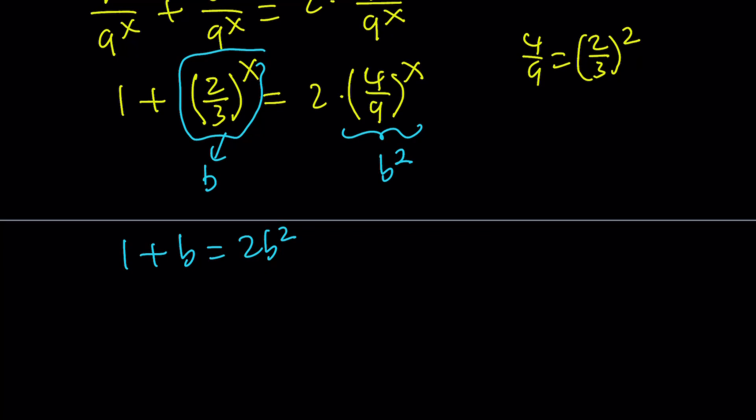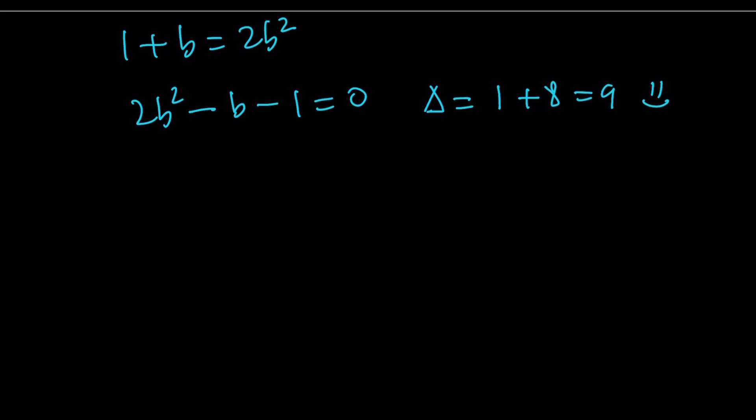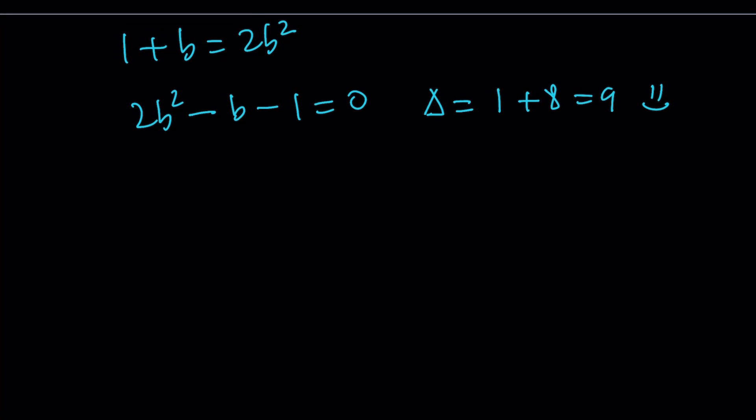Let's go ahead and put everything on the same side. 2b squared minus b minus 1 equals 0. Let's check the discriminant. b squared minus 4ac. And that's a perfect square. Awesome. That means that our equation is factorable. And either trial and error, or you can use the x method and factor it as follows. 2b plus 1, b minus 1 equals 0.